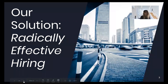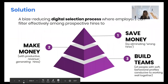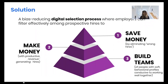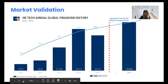Our solution is radically effective hiring — a bias-reducing digital selection process where employers can filter effectively among prospective hires to save money by eliminating wrong hires, make money with productive revenue-generating hires, and build teams of people who are conducive to working well together.